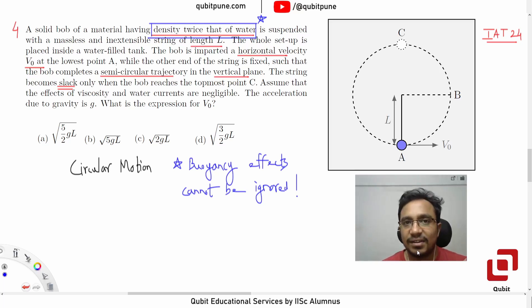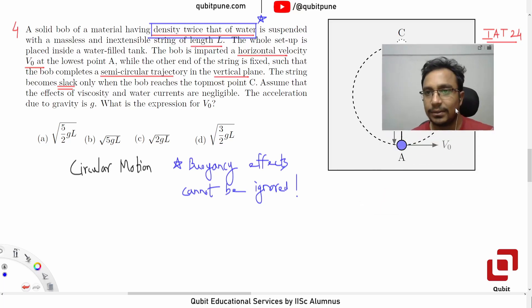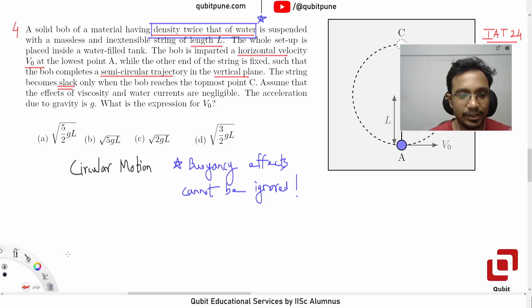Let us first consider the free body diagram of this bob at A and at C. So let us first consider the free body diagram, FBD at C.